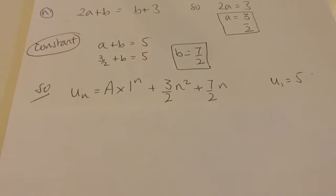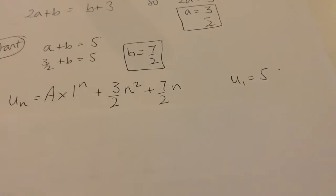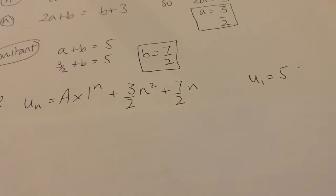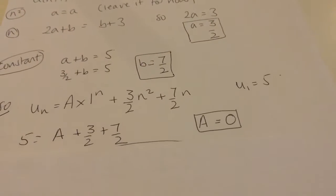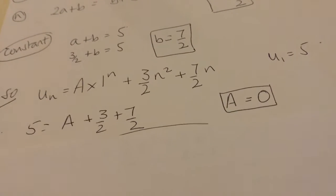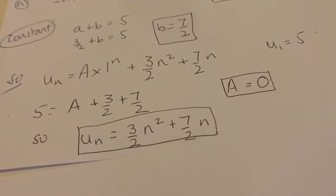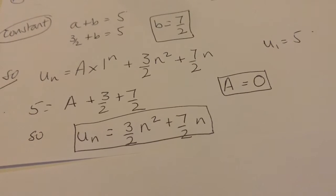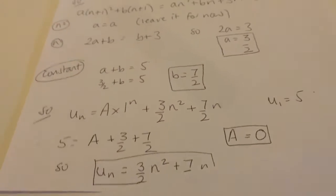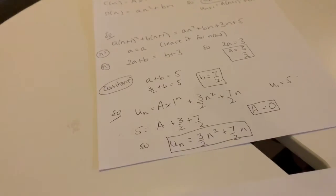I substitute those values back into my general solution. When n equals 1, u₁ equals 5. Substituting n=1 and u₁=5, I get 5 equals A plus 3/2 plus 7/2, which works out to A equals 0. So the general term is (3/2)n² plus (7/2)n. As seen in question 3 part 1, it's a quadratic sequence.